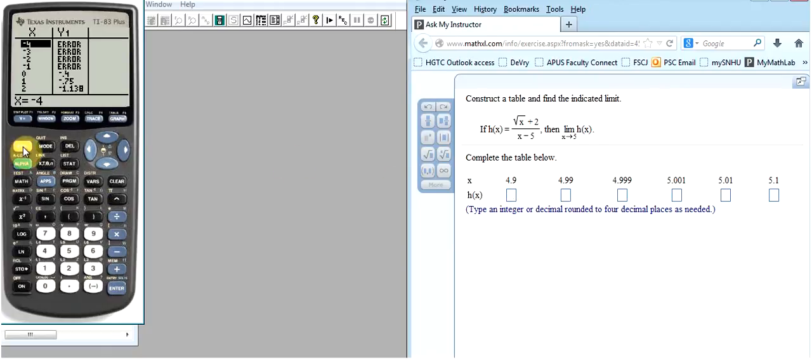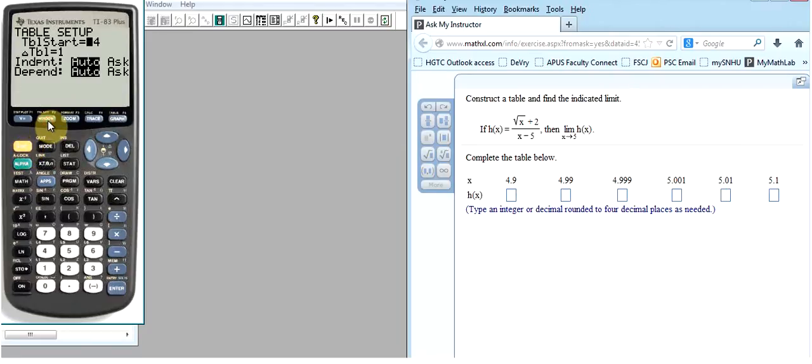So here's how you can do that. Come over to the calculator and hit the second key and then window. That's going to take us to the table setup screen. And use your down arrow to go to the independent line. As you may know, the independent variable is also known as the X variable. I'm going to use the right arrow key to highlight the word ask.